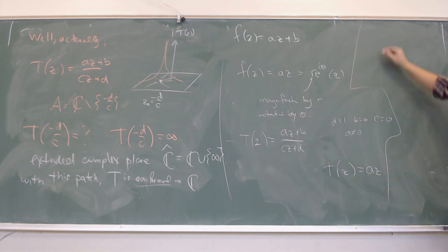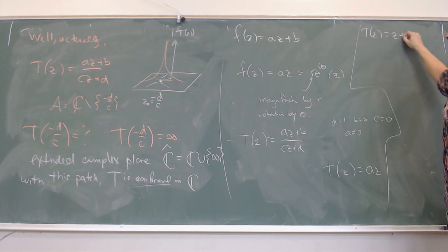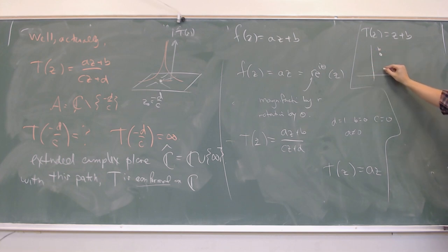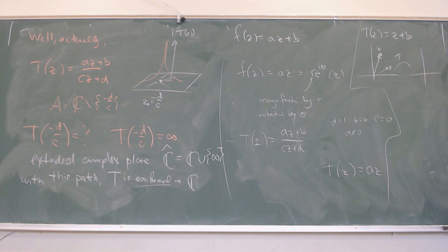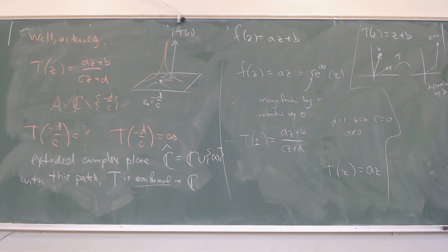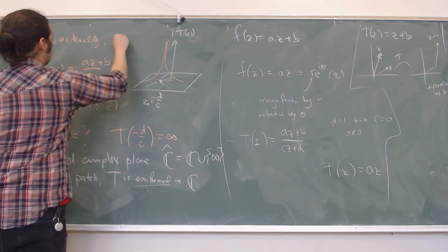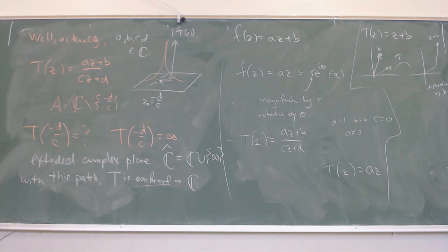Setting a = 1, b = b, c = 0 gives T(z) = z + b, which is translation by b — every input z gets shifted to z + b. In these transforms all coefficients a, b, c, d are complex numbers, not just real. The real versions also make sense but form a limited subclass. So LFTs can perform magnification, rotation, and translation.